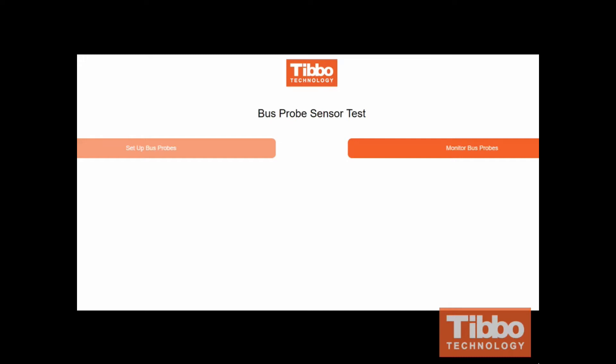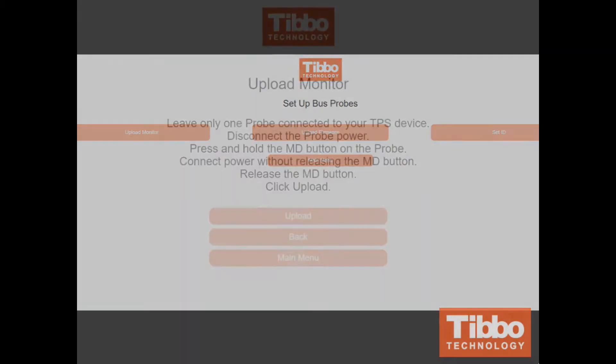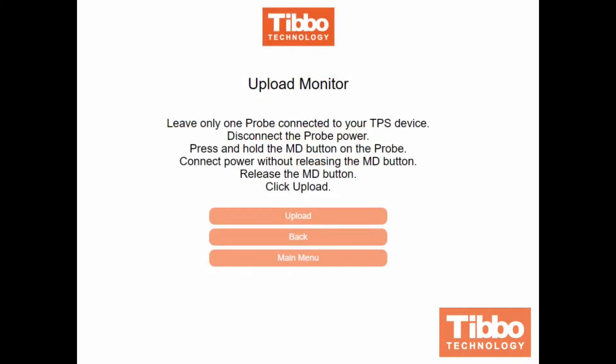First, select Setup Bus Probes. On the Setup Bus Probes page, you can update the device's monitor, update the firmware, and set the ID. We recommend that you update these simultaneously. Both monitor and firmware files can be found in the project folder that you have downloaded. Selecting any of the options will take you to a page with detailed instructions on how to proceed. Please follow the instructions carefully so as to avoid running into any issues.